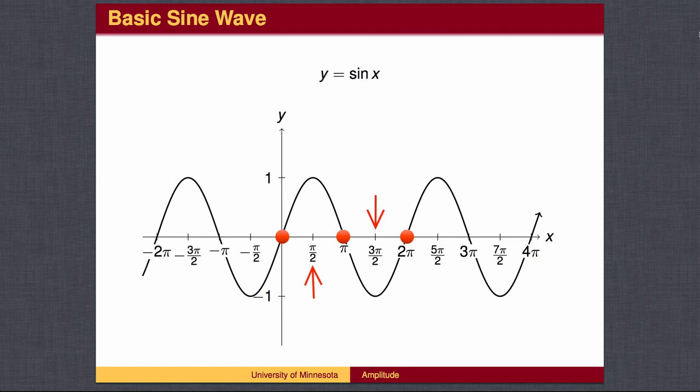The tops of the waves are at a height of 1, and the bottoms of the waves are at a depth of negative 1. The length of one wave is 2 pi.